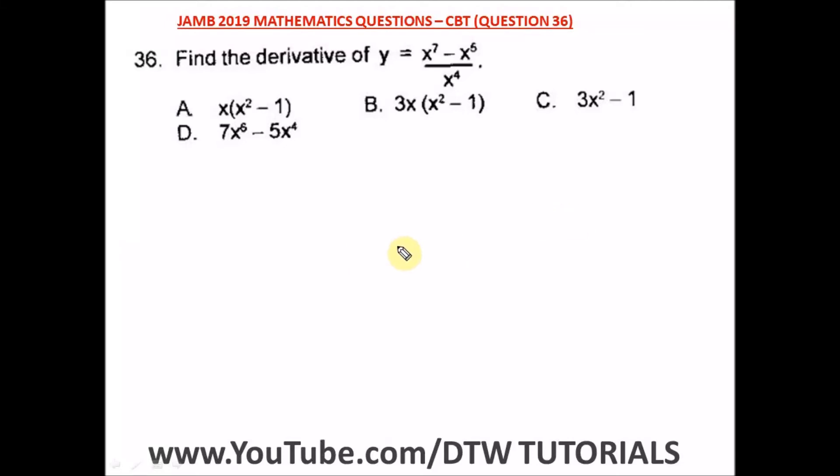Question 36 of the JAMB 2019 Mathematics past question, that's a UTME CBT exam. It says find the derivative of y equals this. So it means we are differentiating this. We have here y equals x raised to the power 7 minus x raised to the power 5 divided by x raised to the power 4.